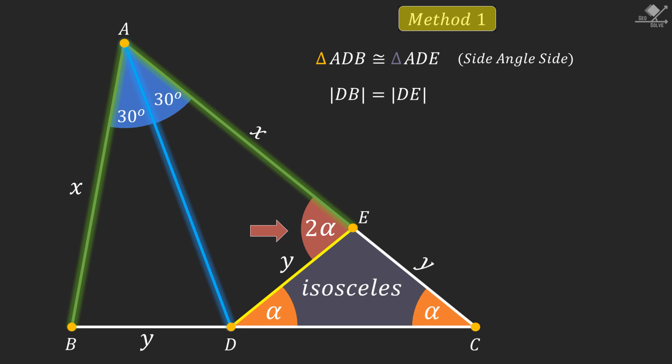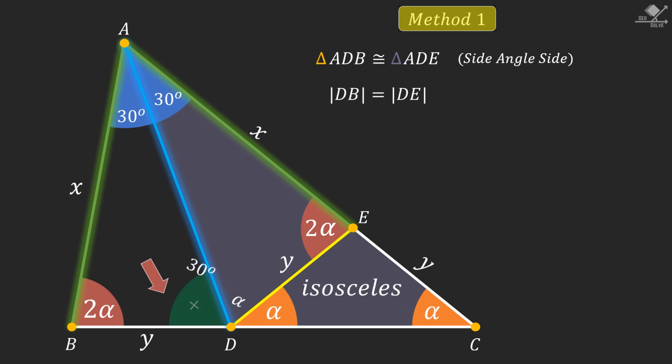From congruency of previous two triangles, this angle will also be 2 alpha degrees. Now focus on this triangle. If we use exterior angle theorem on this triangle, this angle will be alpha plus 30 degrees.